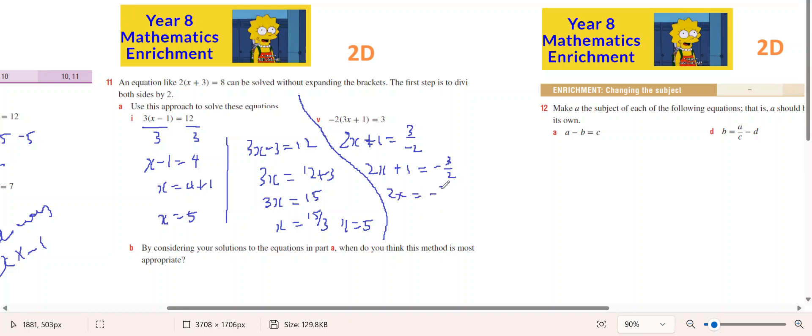2x equals negative 3 on 2 minus 1. 2x equals negative 5 on 2. And when you divide both sides by 2, x equals negative 5 on 4 is going to be the answer.